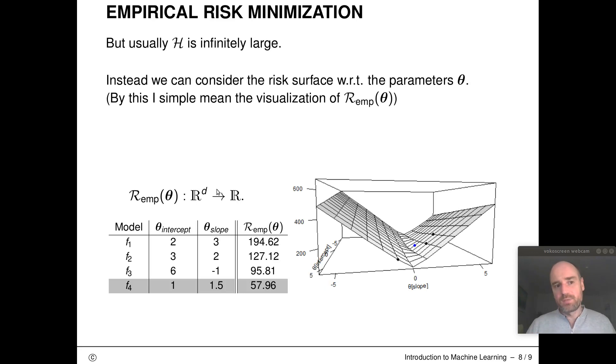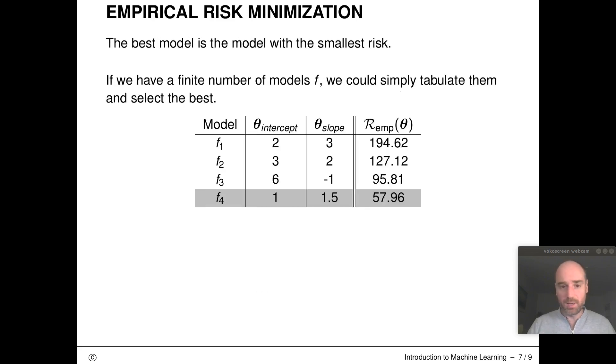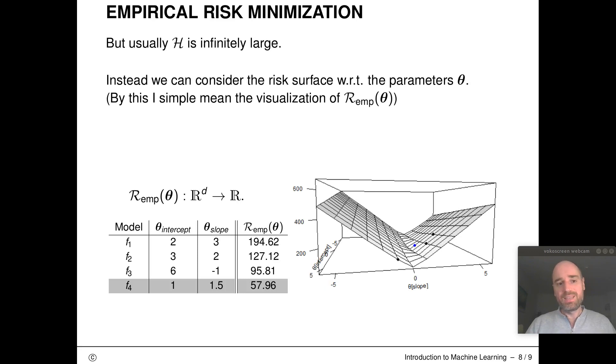But of course usually our hypothesis space is infinitely large. It's also infinitely large for this simple example of linear regression with one intercept and one slope. The parameter spaces are R². So instead of tabulating everything in a naive manner...